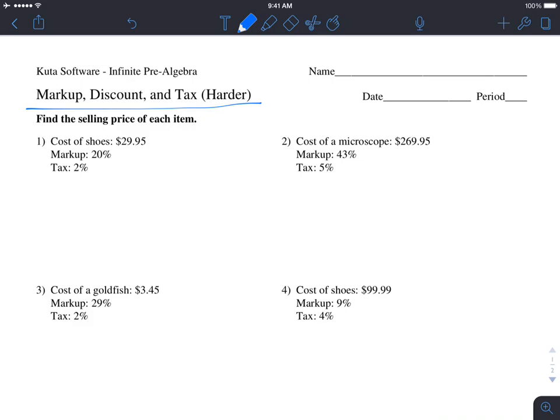The cost of shoes is $29.95, the markup is 20%, and the tax is 2%. Remember, markup and tax we're adding, whereas discount we would subtract. For the markup, we do 20% of $29.95. In our calculator, 0.20 times 29.95 equals $5.99. We add $5.99 plus $29.95 to get $35.94. This is the markup price - what we would sell to the customer.